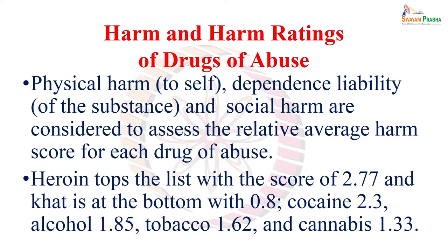Coming to the harm and harm rating of drugs of abuse: drugs of abuse can cause physical harm to self, can cause dependence liability of the substance, and have social harm. These three things — physical harm, dependence liability, and social harm — are considered together to assess the relative average harm score for each drug of abuse.